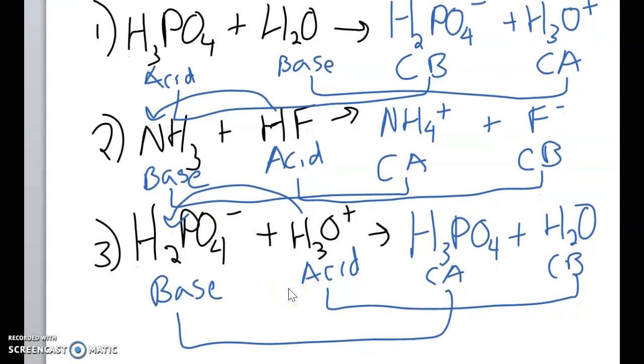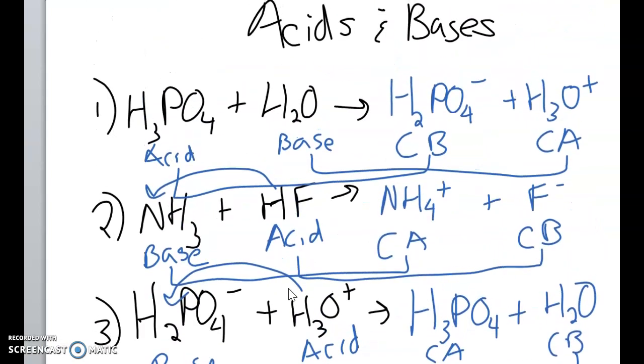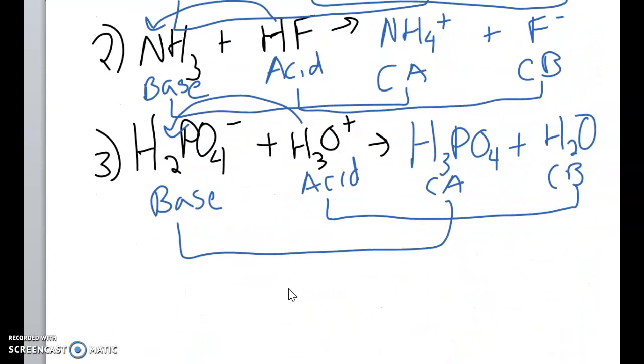So to summarize, the Bronsted-Lowry definition of acids and bases is nice because it's more general. The key thing is that the acid is donating the proton to the base. So its H plus or its baton is going right onto the base. And that's what makes this an acid and this a base. This is called the proton donor and this is called the proton acceptor.